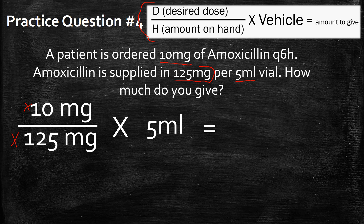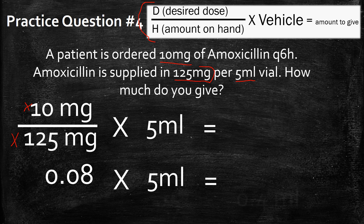Now all we have to do is solve it. 10 divided by 125 is 0.08. You're going to multiply that by the vehicle, which is 5 milliliters, and that's going to give you a final answer of 0.4 milliliters. So you're going to give this individual 0.4 milliliters in order to give them their desired dose of 10 milligrams.